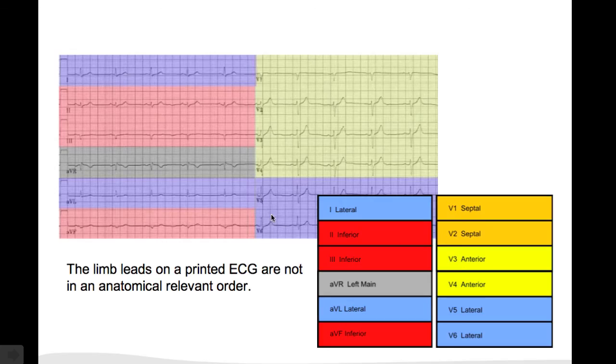On a surface EKG, these leads are not printed in an anatomical relevant order. So you have to imagine that these leads belong together. 1, AVL, V5 and V6 are the lateral leads. 2, 3, AVF the inferior leads. And the others are the anterior leads.